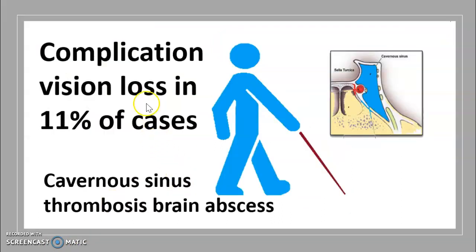Complications include vision loss in 11% of cases and cavernous sinus thrombosis. Children are more vulnerable due to their immature immune system. Possible complications are vision loss, hearing loss, cavernous sinus thrombosis, meningitis, cerebral abscess, and even death.